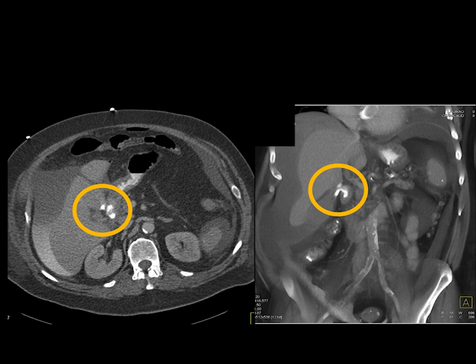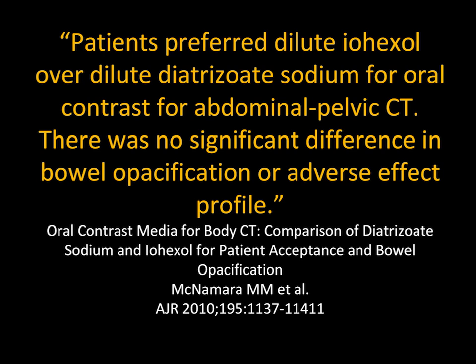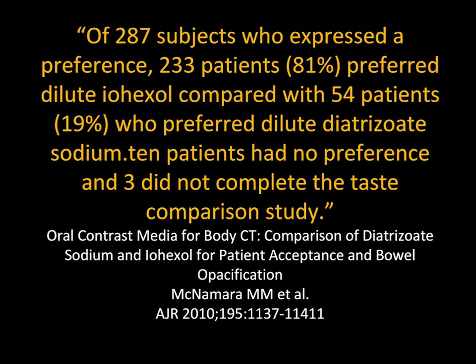With positive contrast you can see the leak; with neutral or no contrast, you won't. Oral omnipaque will not cause peritonitis — it's inert in the peritoneal cavity. Patient satisfaction with oral contrast is important. With barium, it takes forever because it tastes terrible and is thick. When you put oral omnipaque in solution, it tastes just like water, so patients drink it quickly and that speeds the process along. In patient preference studies, 81% preferred oral omnipaque in solution compared to barium products.